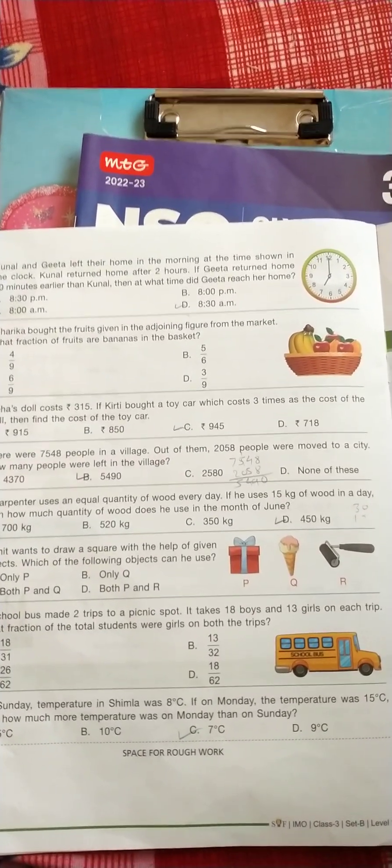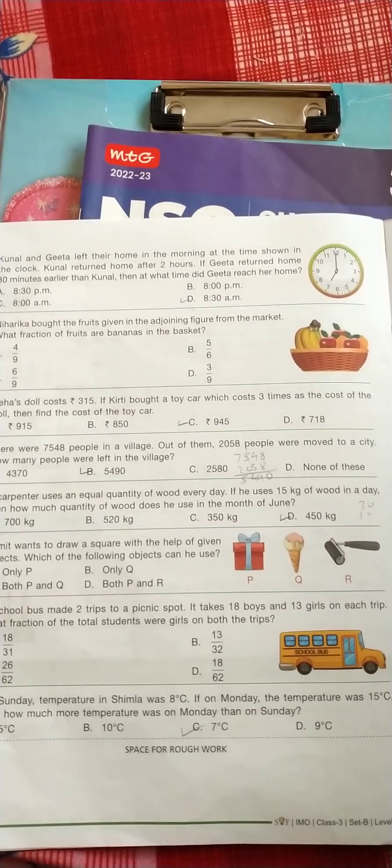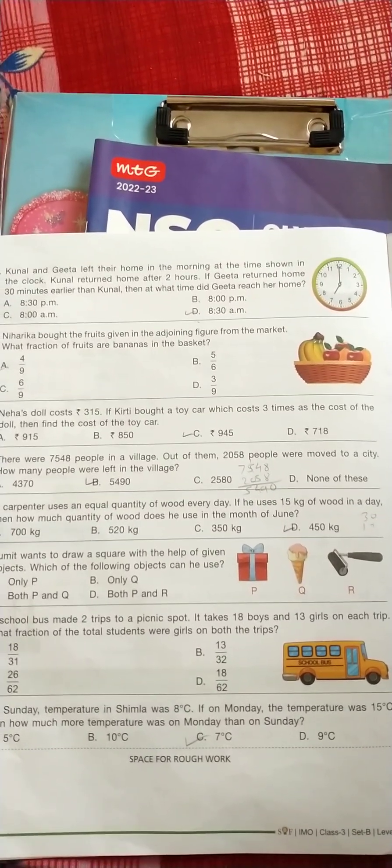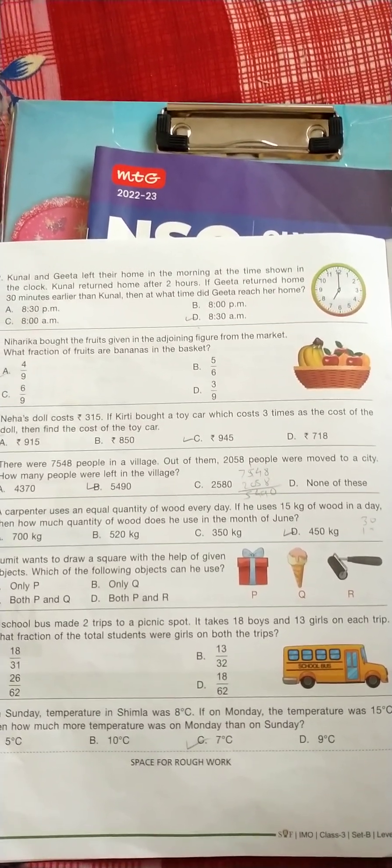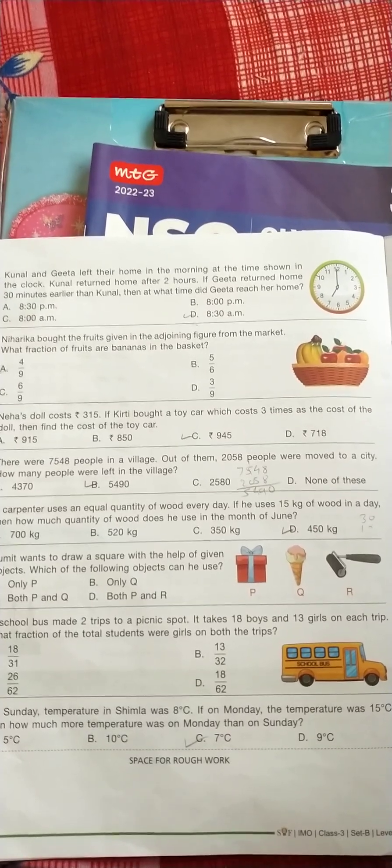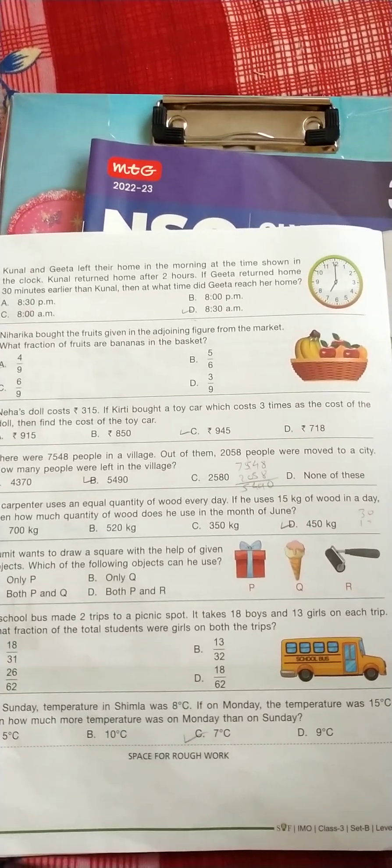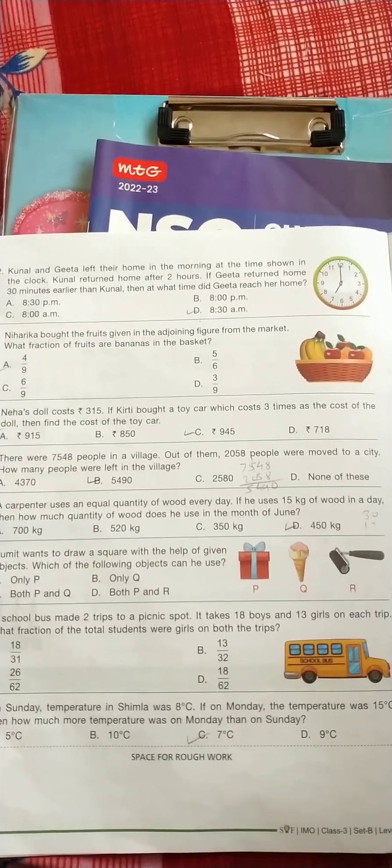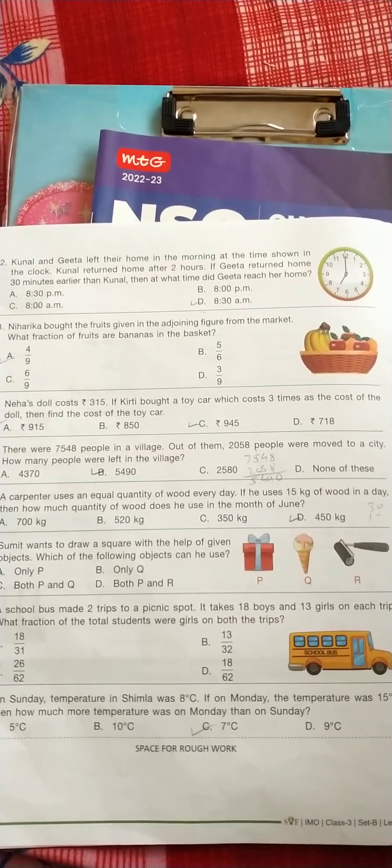So Kunal returned in 2 hours means 7, 8, 9, at 9 am. Geeta came before half hour, it means the correct option is D, 8:30 am.